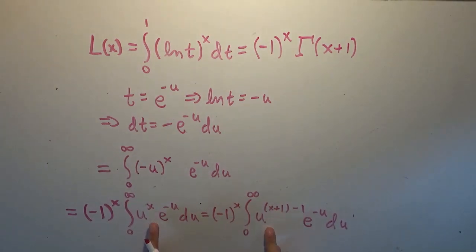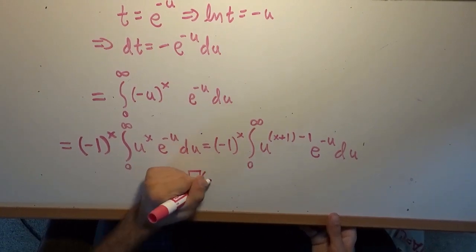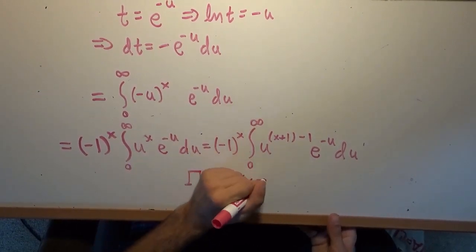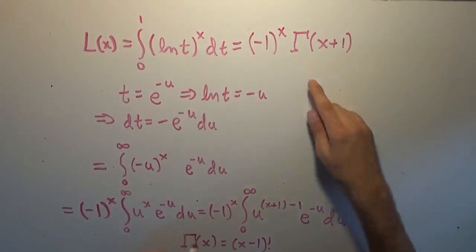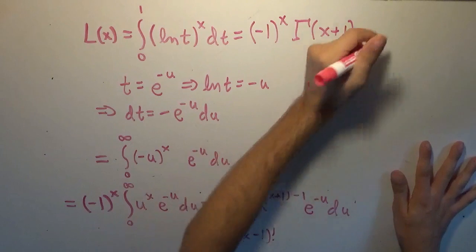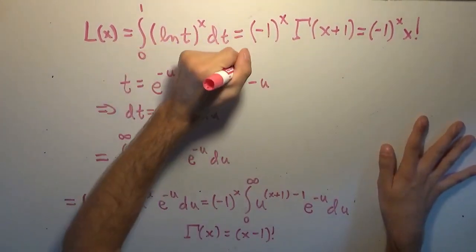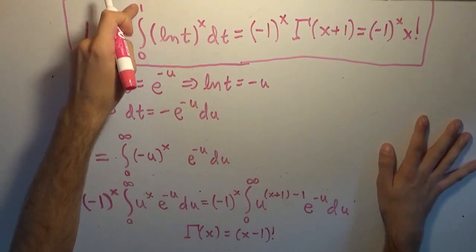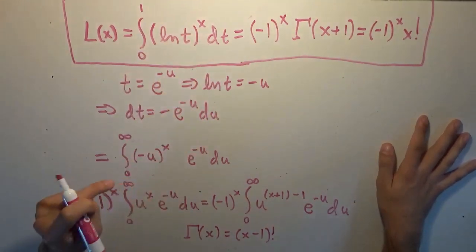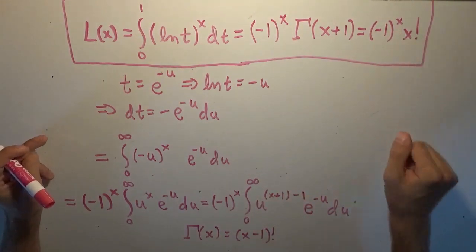The relationship of the gamma function to the factorial is that gamma of x equals x minus one factorial, which means gamma of x plus one equals x factorial. So this is also equal to negative one to the x times x factorial — which is just wacky. So the final answer is: L of x, the integral from zero to one of the natural logarithm of t to the power of x dt, equals negative one to the power of x times gamma of x plus one, or equivalently negative one to the power of x times x factorial.